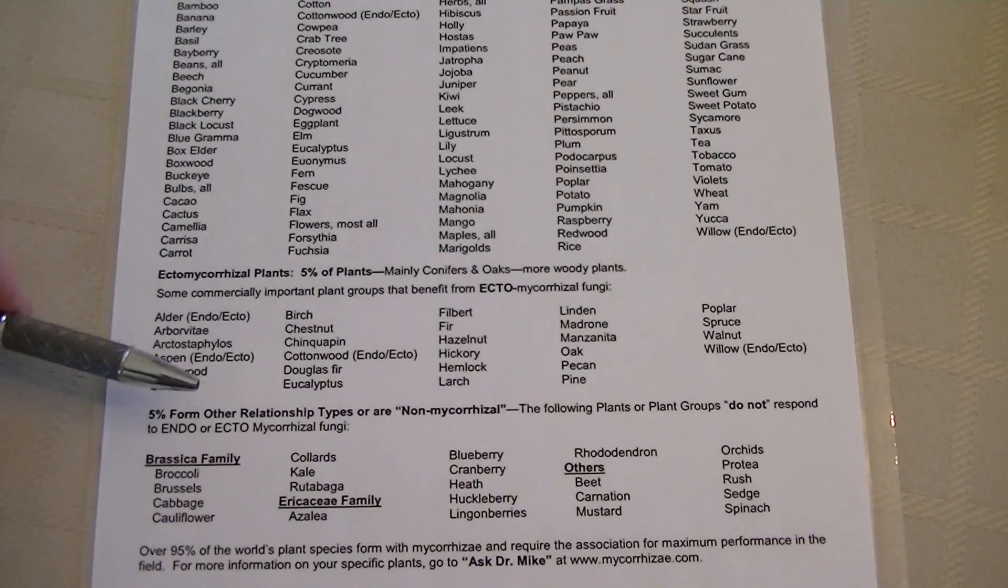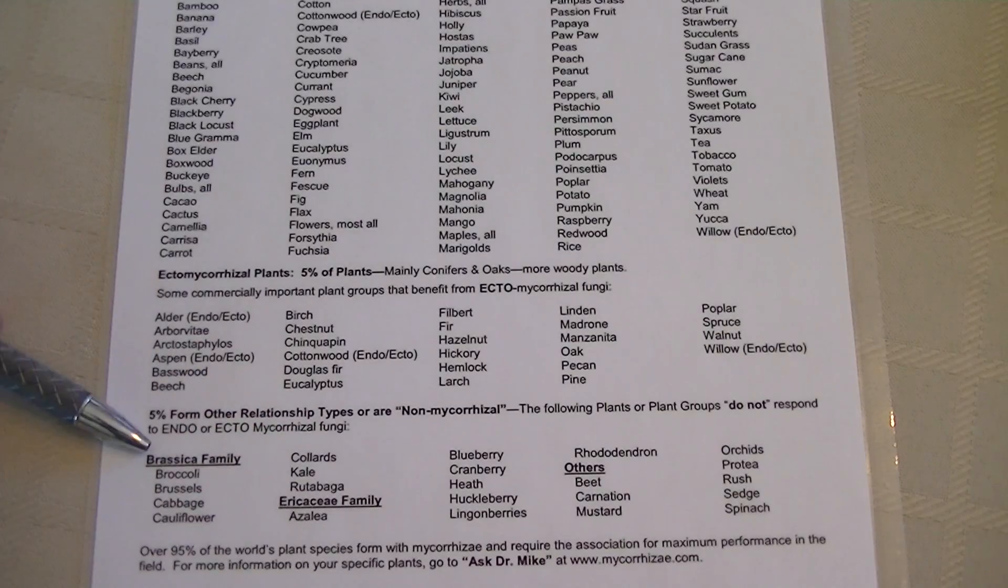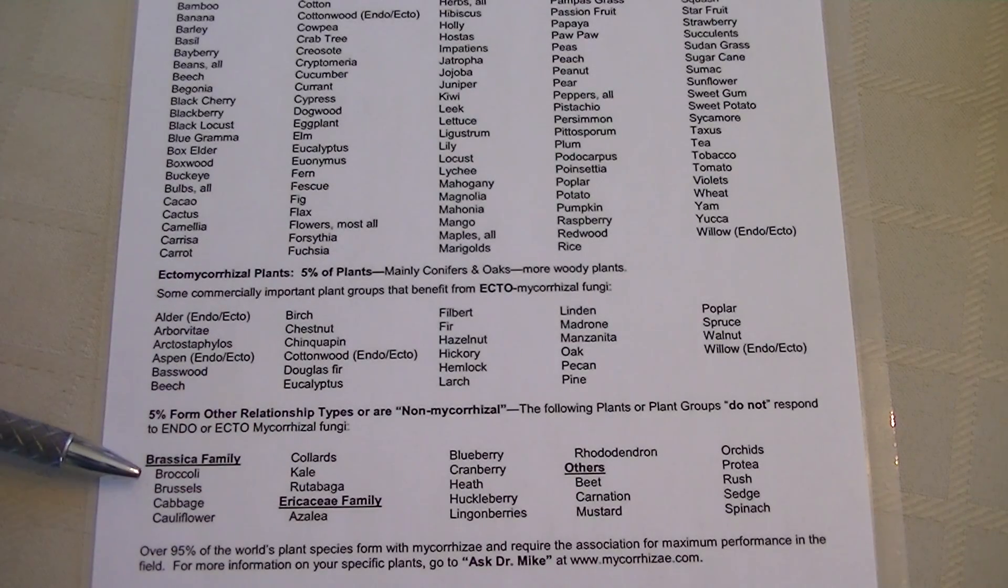And now you'll see here that we have kale underneath the brassica family, just like your broccoli, your cabbage, your cauliflower, and your collards.